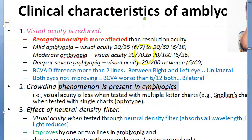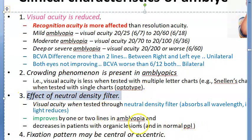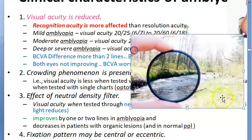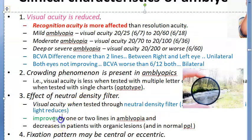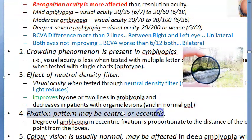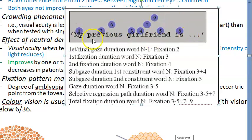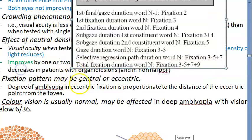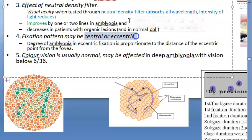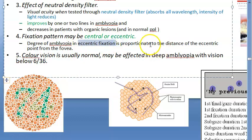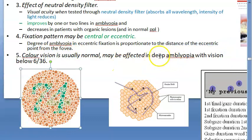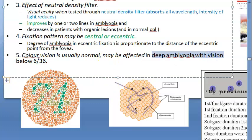Crowding phenomenon: give them a single optotype and they will read. Regarding neutral density filter: strangely, these patients' vision improves through a neutral density filter — light intensity becomes less and they see better. Fixation pattern may be central or eccentric. The degree of amblyopia and eccentric fixation is proportionate to the distance of the eccentric point from the fovea. Color vision is usually normal but can be affected in deep amblyopia.